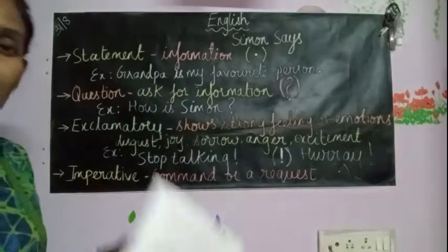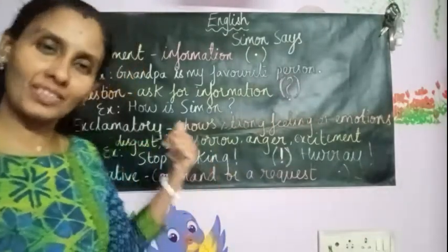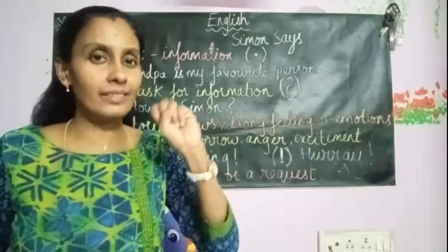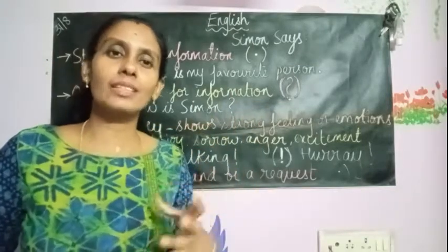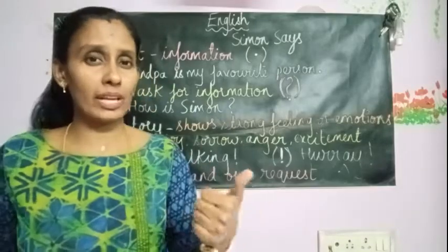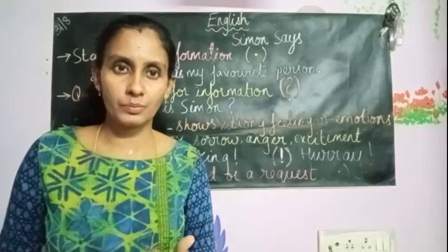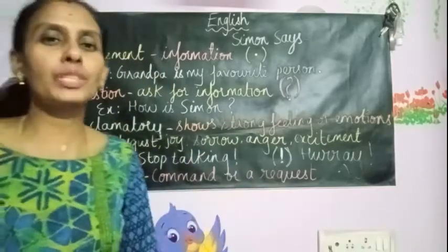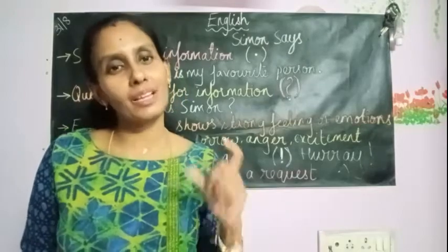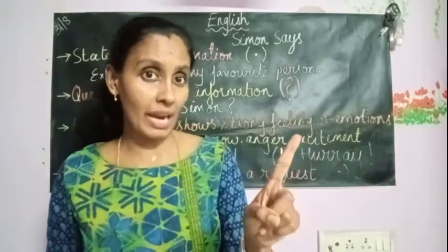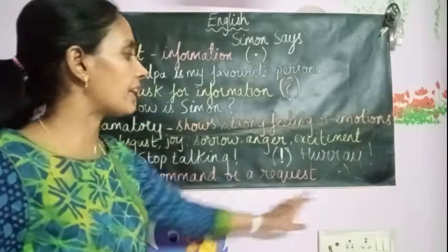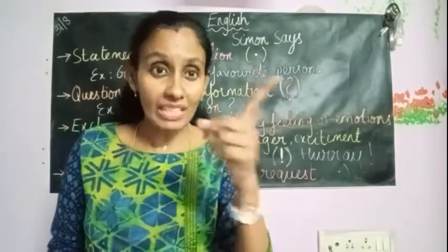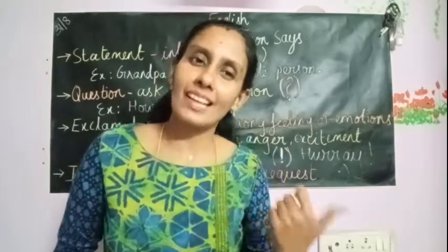The last one is imperative. In your textbook they haven't given the word imperative, but in kinds of sentences this is the last one. Under imperative we have two types: command and request. A command is where I order you to do something — for example, 'Stand up on the bench right now.' A request is where we add pleasing words, like 'Please, will you get me a glass of water?' Imperative sentences usually end with a full stop.